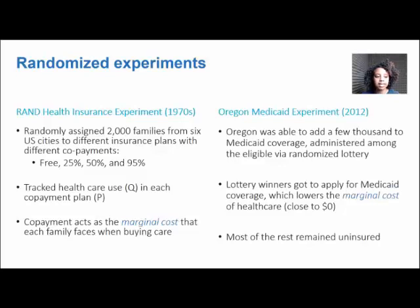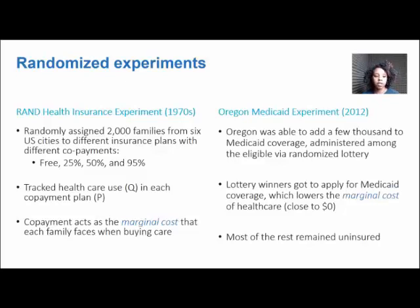They tracked the quantity of health care demanded under each co-payment plan to plot out those price-quantity combinations observed across these people. The co-payments in this case act as the marginal cost that each family faces when they purchase health care — the price of one additional unit of care consumed.